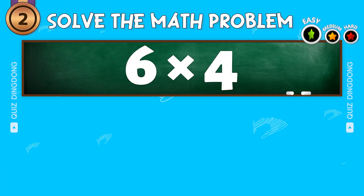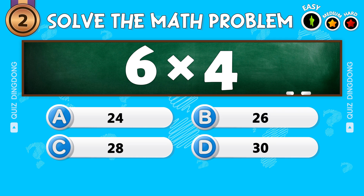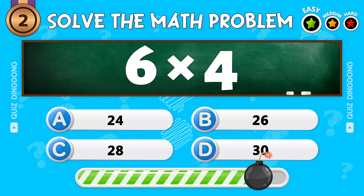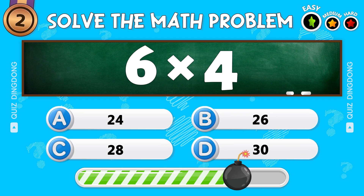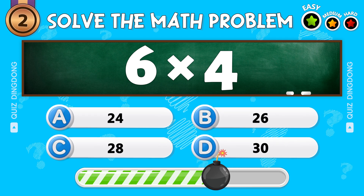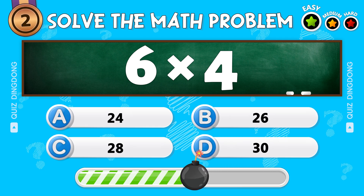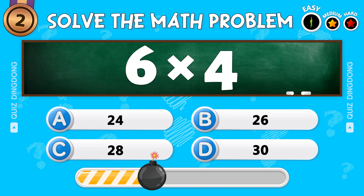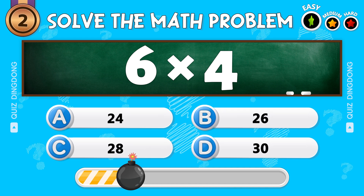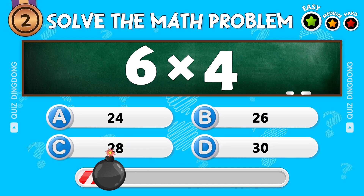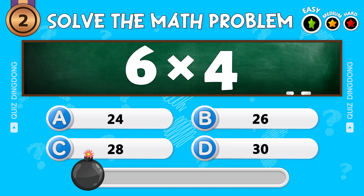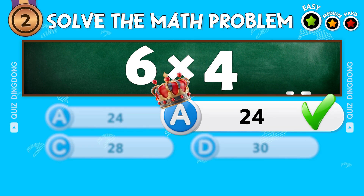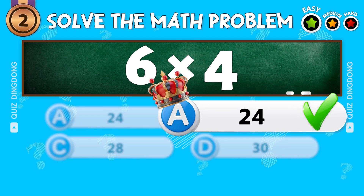Second question. Try this one. What's 6 times 4? That's right! 6 times 4 is 24.